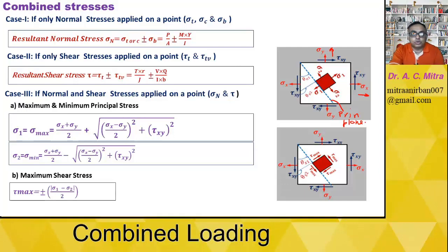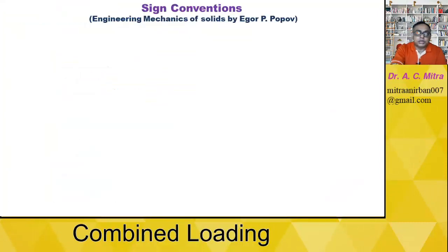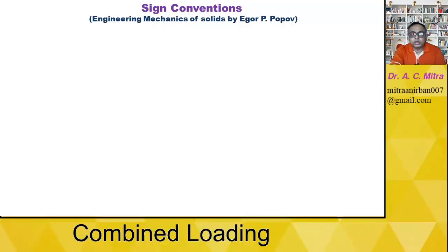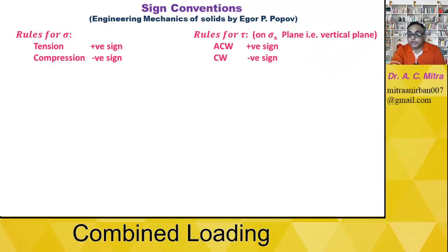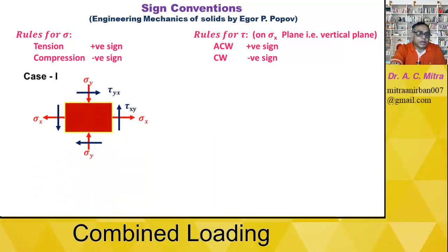Another important concept is the sign conventions for all stress types. I am using Pytel's Mechanics of Solids as a reference. Note that different books may have different sign conventions, and any convention is valid if used consistently. Using Pytel's convention: for normal stresses, tension is positive and compression is negative. For shear stress τ, anti-clockwise is positive and clockwise is negative — but this must be checked only on the sigma-x plane, which is the vertical plane perpendicular to the x-axis.